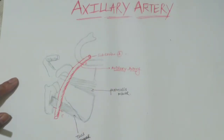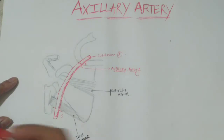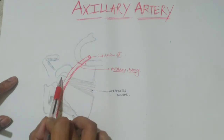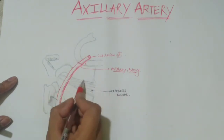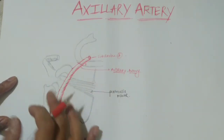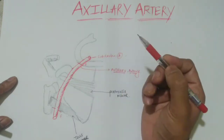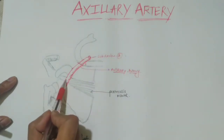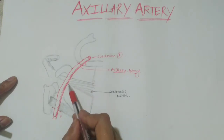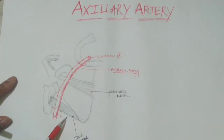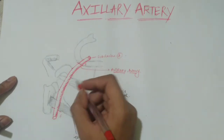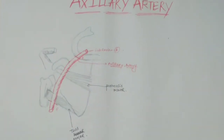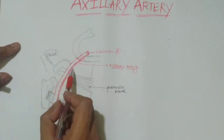The axillary artery is divided into three segments, similar to the subclavian artery. The first segment is the region before the pectoralis minor muscle, from the lateral edge of the first rib to the upper border of pectoralis minor. The second segment lies under the pectoralis minor. The third segment runs from the inferior border of pectoralis minor to the inferior border of teres major. The branches follow a 1-2-3 pattern: one branch from the first segment, two from the second, and three from the third — totaling six branches.